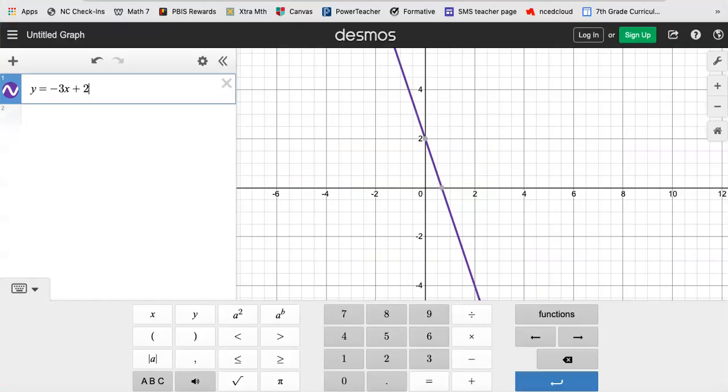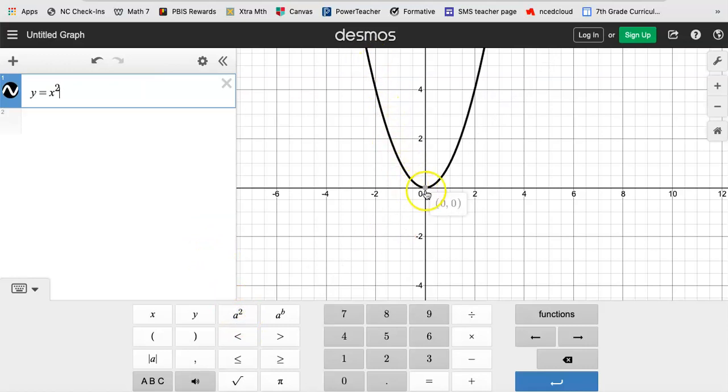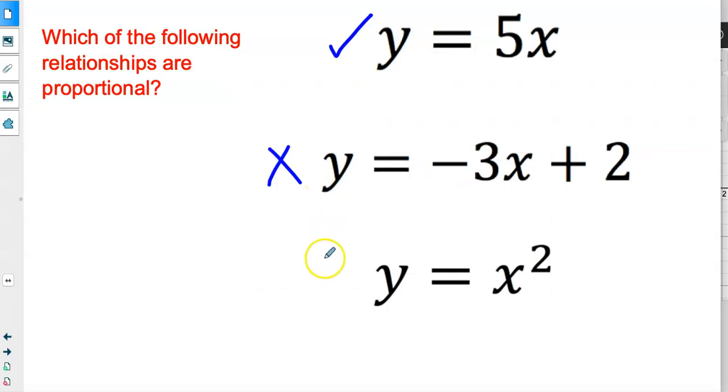y = x². Let's graph this one next. y = x and then square it. And y = x², look, it's a quadratic, so it's curved. It does go through (0, 0), but since it's curved, it's not a proportional equation. So this is not a proportional equation.